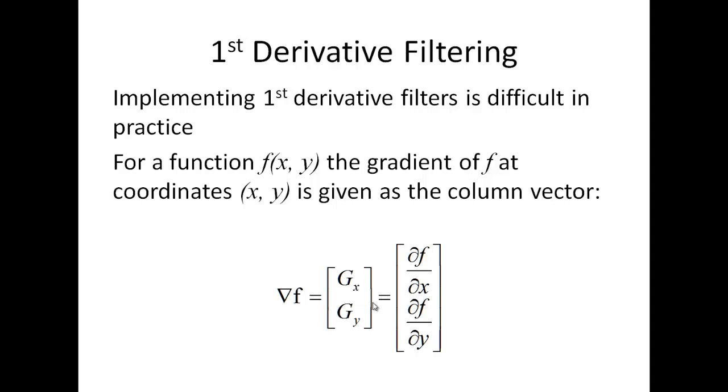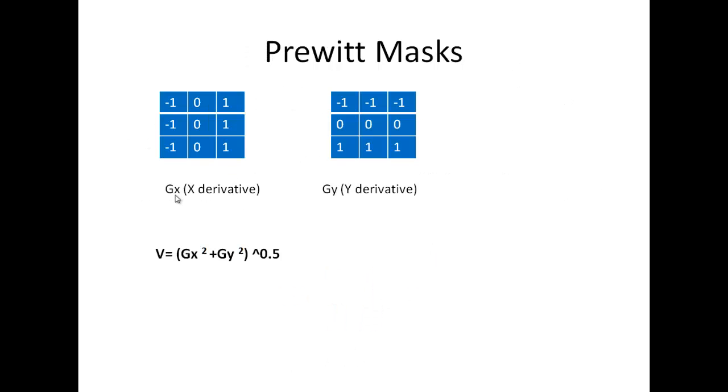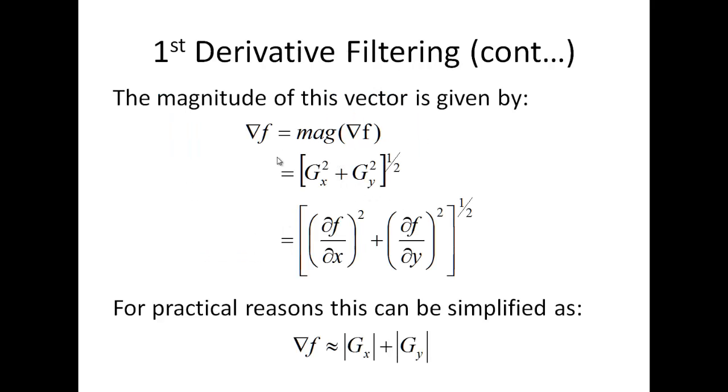To implement this we can just simply take a kernel like this. So gx would be this kernel, gy would be this kernel. And I can then take the magnitude of the difference and find out the magnitude of the vector that we are getting out of the filter.